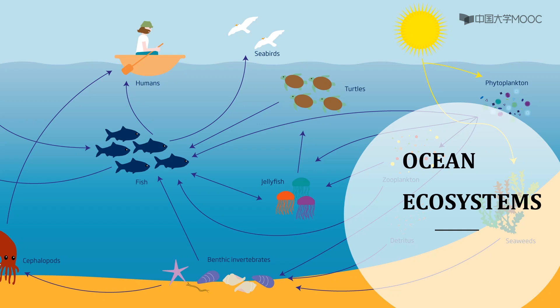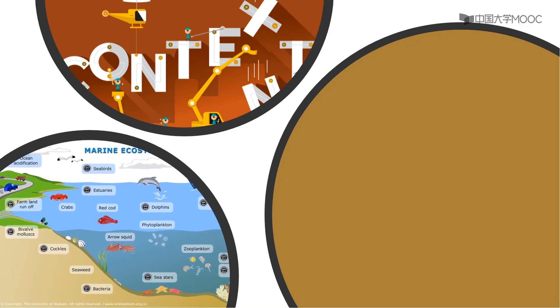Ocean ecosystems are home to the smallest organisms like plankton and bacteria, as well as the world's largest living structure, the Great Barrier Reef. As a very broad topic, ocean ecosystems can be studied from different perspectives or forms of context. For instance, you could examine it from the ecological, economic, or geographical context.